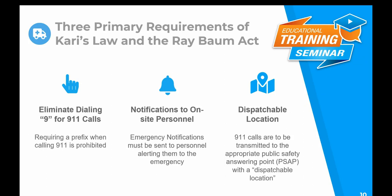I mentioned Kari's Law and Ray Baum's Act — let's talk about that as it's very important to know. Those primary requirements include: eliminate dialing 9 for your 911 calls. You want to work with a provider that does not require that 9 or a prefix when dialing 911. Next, you want to ensure your provider has the ability for emergency notifications to be sent to designated extensions for personnel, alerting them to the emergency location. Confirm that the SIP trunk provider can route 911 calls to be transmitted to the appropriate first responder with that dispatchable location.